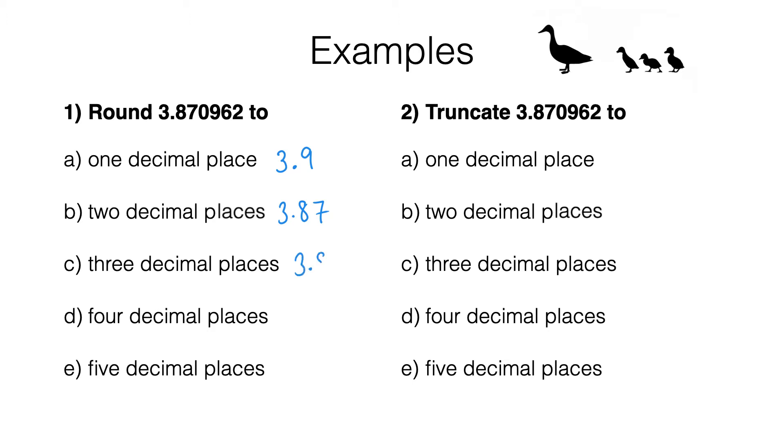It rounds to 3.871 to three decimal places, 3.8710 to four decimal places—don't forget that zero—and finally it rounds to 3.87096 to five decimal places.